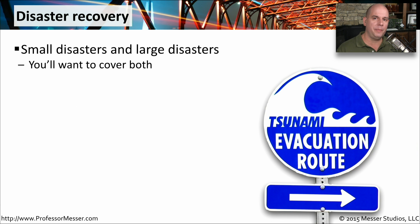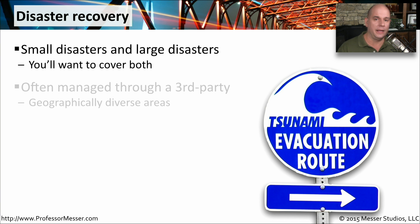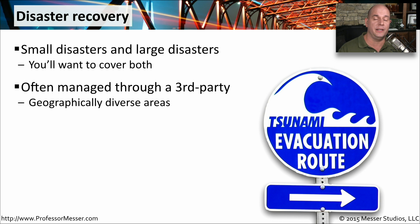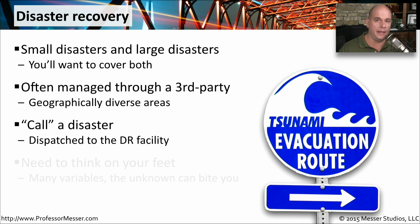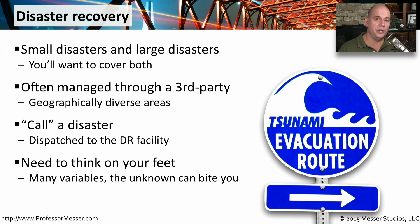These business continuity plans really become valuable when there's a disaster — whether it's a small disaster or a large disaster, you're going to need some way to keep the business up and running. If you're a relatively large organization with locations in other cities or even other countries, you might need to use third parties to help you manage this disaster recovery process. Somebody has to make the decision to put this disaster recovery plan into action, and if it's a relatively large disaster, you may be dispatched to another facility to get it up and running with all of your IT systems. Recovering from a disaster can be one of the most challenging things you do in technology, which is why it makes sense to plan ahead so that all of these different variables are covered.